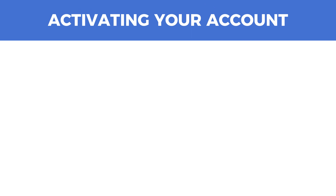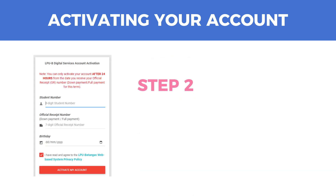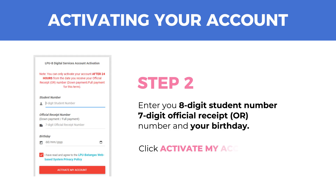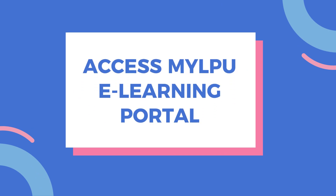Here are the steps. Step 1: Go to this website. Step 2: Enter your 8-digit student number, 7-digit official receipt number, and your birthday. Click the Activate My Account button. Step 3: Under the Learning Management System section, get your username and password.